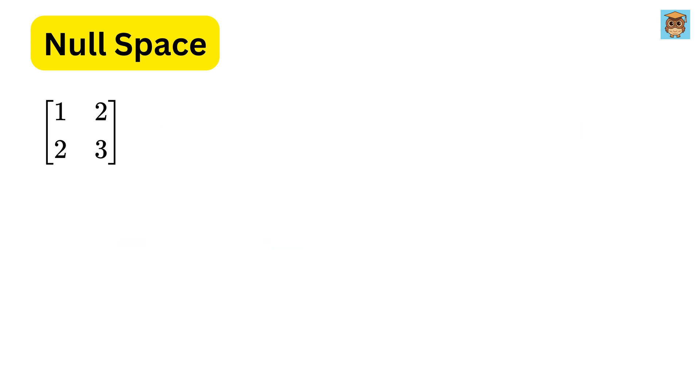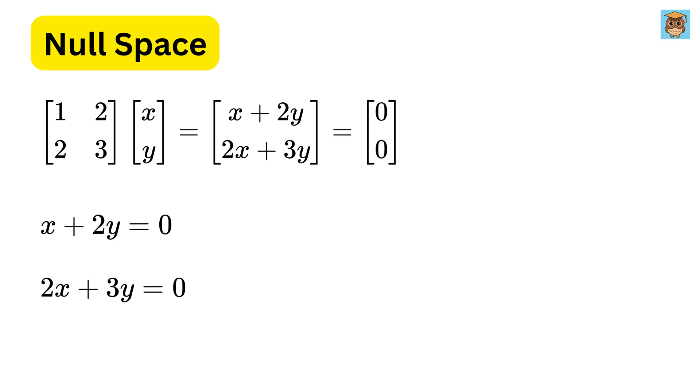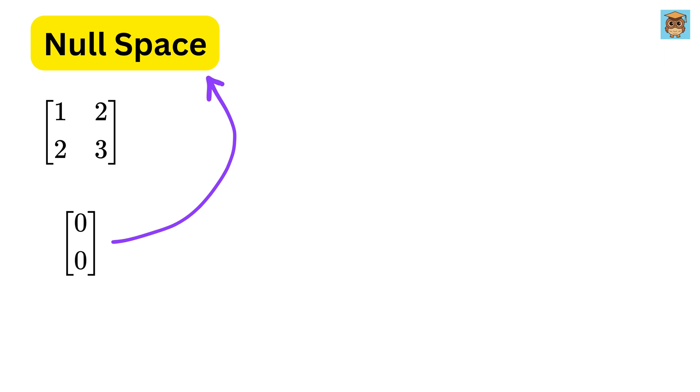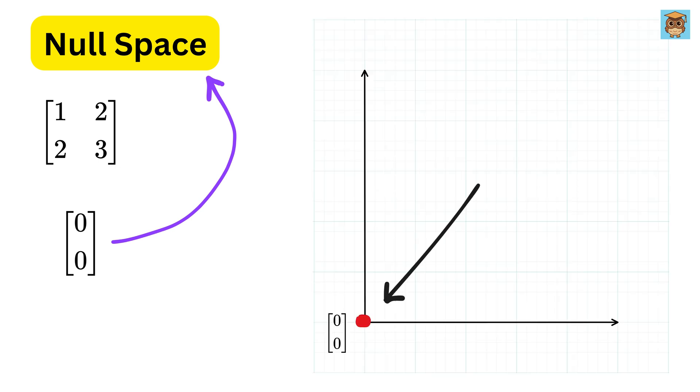Now consider this matrix. When we multiply any input vector x, y with it, we get this vector. Equate this thing to 0, 0 to get this equation as 0, and this one also as 0. This gives x equals minus 2y. Substitute into this equation to get y equals 0, and thus x equals 0. So, the null space contains only the 0 vector, which means the null space is just a single point, or the origin, that is, 0, 0. It's not a line, not a plane, just a tiny dot sitting at the center.